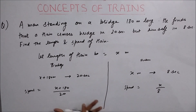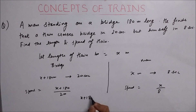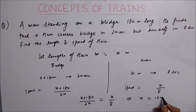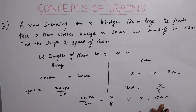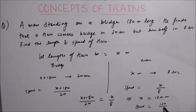Since it is the same train, both speeds are equal. Equating: (x plus 180) divided by 20 equals x divided by 8. Solving this equation gives x equals 120 meters — that is the length of the train. The speed is calculated by substituting x equals 120, giving 120 divided by 8 equals 15 meters per second.